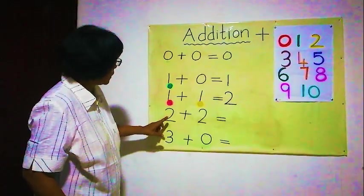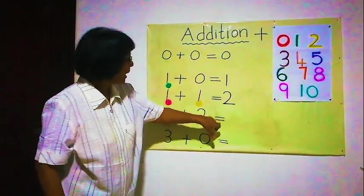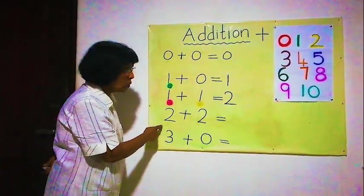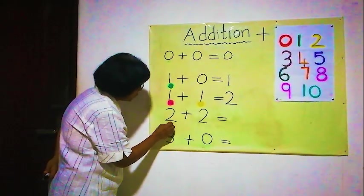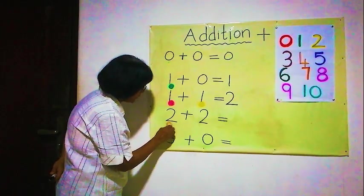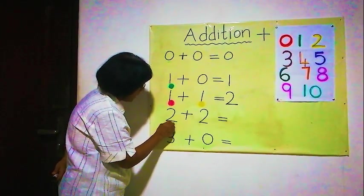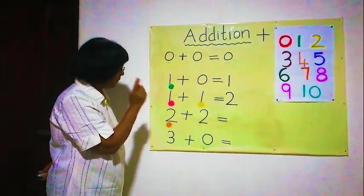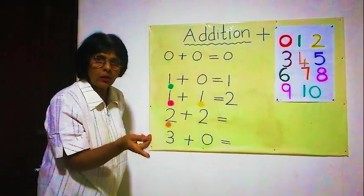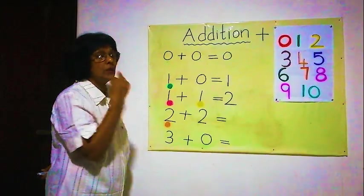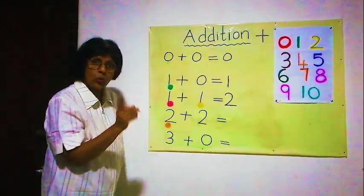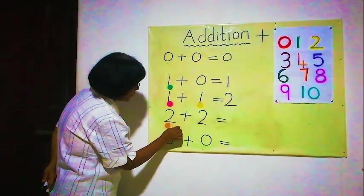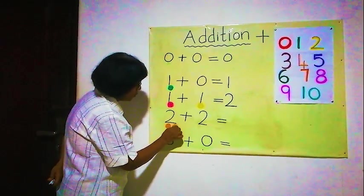Now the next one. Two and two makes — what's the answer? We will see. For this two, we are going to draw two balls. If I draw only two balls total here, the answer will be wrong. If there is two, I must draw two. You also must draw two. If it is three, we must draw three. If it is one, we must draw one. If it is zero, we can't draw anything. So here the number is two, you must draw two balls. I am drawing two balls here.